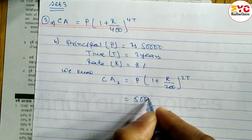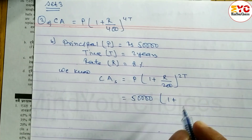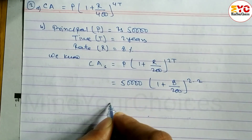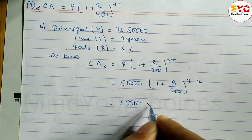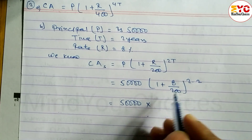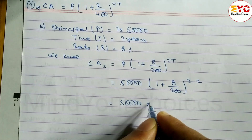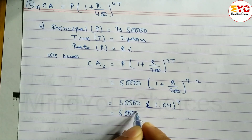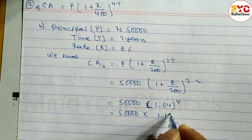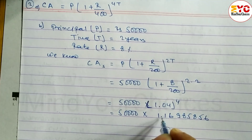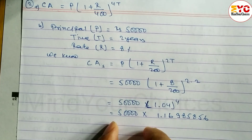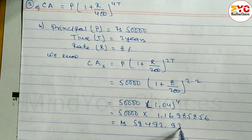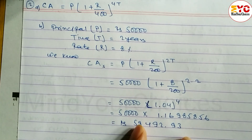Placing values: P = 50,000, R = 8%, so 8 divided by 200, power 2T where T = 2, giving power 4. Calculating this, the exact book answer is Rs. 58,492.93. So he received Rs. 58,492.93 as compound amount semi-annually.